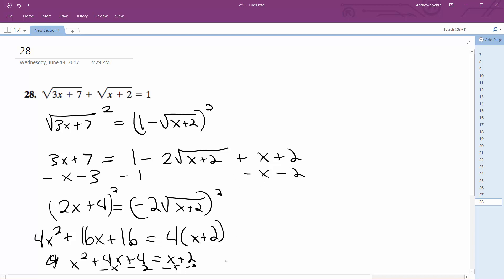So moving this over here, so I get x squared plus 3x plus 2 is equal to 0. This factors down to x plus 1, x plus 2 is equal to 0.